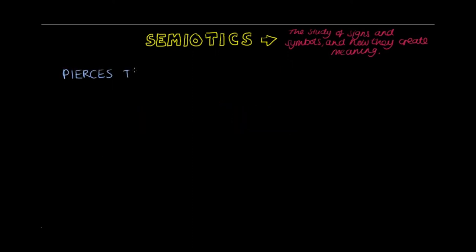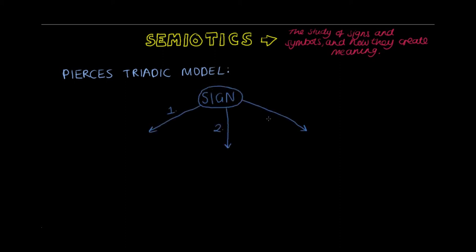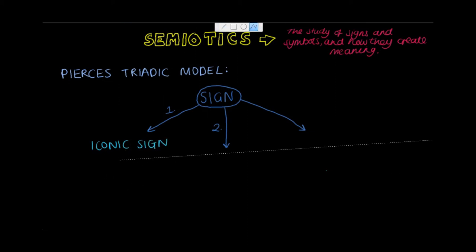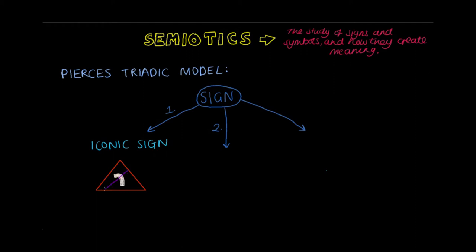However, academic Peirce furthers this idea with his triadic model. He says that a sign can be split into one of three groups. Firstly, an iconic sign, when the signifier resembles the signified — such as a road sign where the signifier is a cartoon-style copy of the signified.